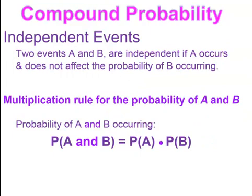The next type of compound probability involves independent events. Two events A and B are independent if A occurs and it doesn't affect the probability of B. We're going to use the multiplication rule for the probability of A and B happening — we multiply the probability of A by the probability of B.